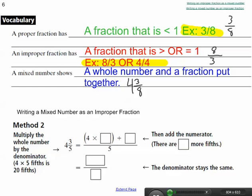I'm going to do 5 times 4 plus 3. So I multiply my denominator and whole number, 5 times 4, and then I add in my numerator. So plus 3.